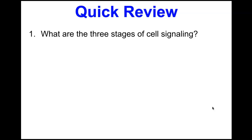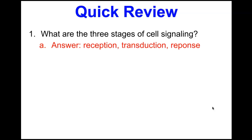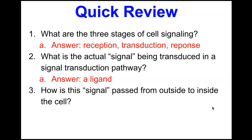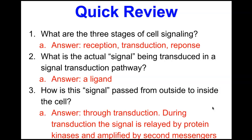Quick review: the three stages of cell signaling are reception, transduction, and response. The actual signal being transduced in a signal transduction pathway is a ligand — the molecule that forms a biological complex to initiate a response. The signal is passed from outside to inside the cell through transduction, where it is relayed by protein kinases and amplified by second messengers.